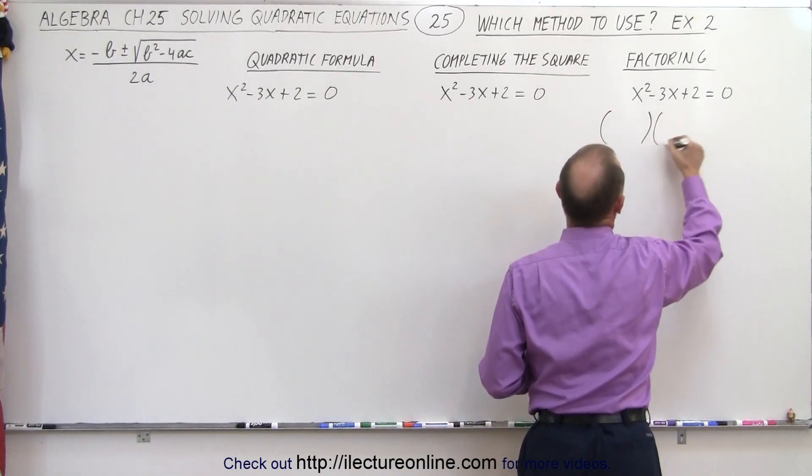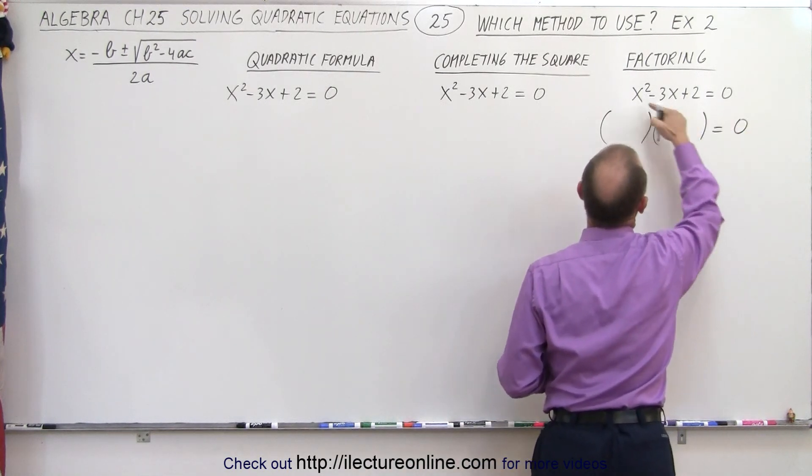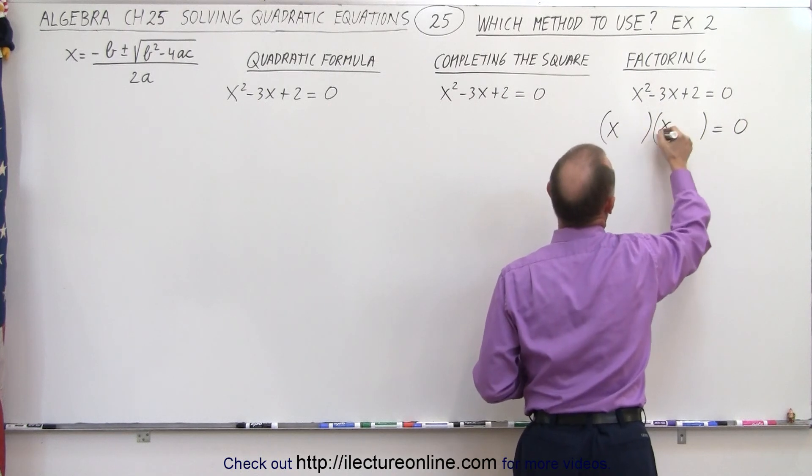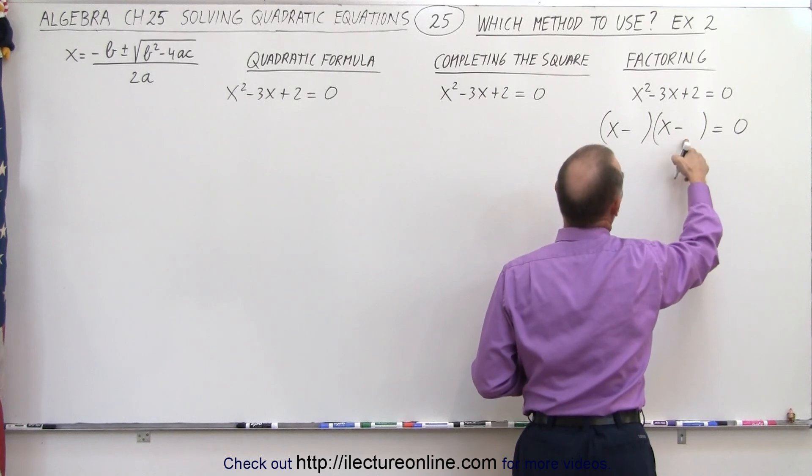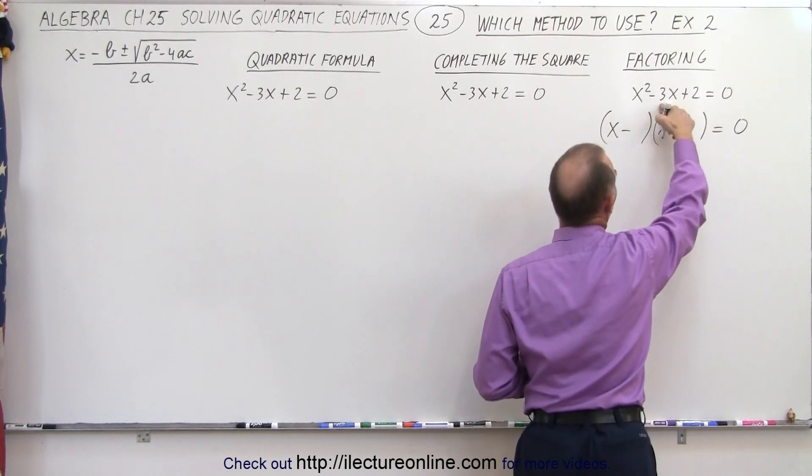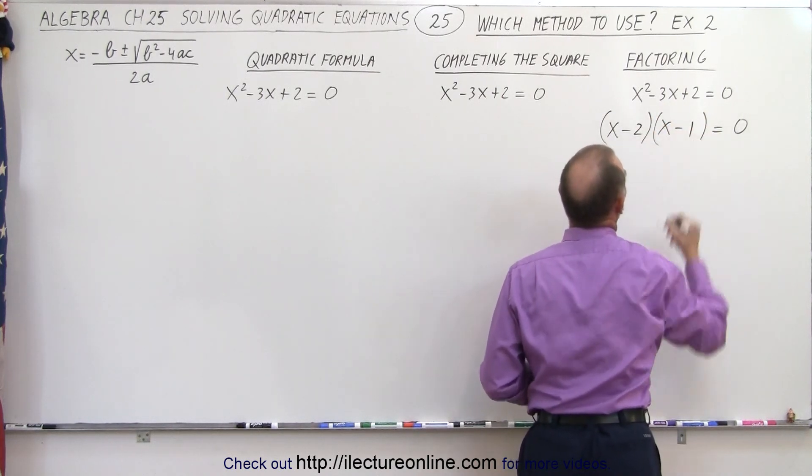So that means we're going to write this as the product of two binomials. We know we need an X and an X. The signs dictate that they both need to be negative, and I need two numbers. When I multiply, they give me 2. When I add, they give me 3. 2 and 1 will do the trick.